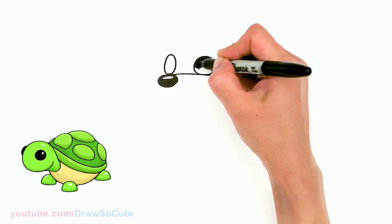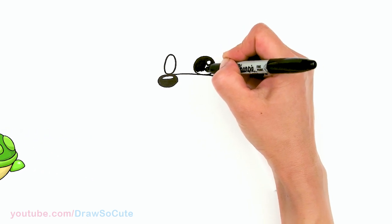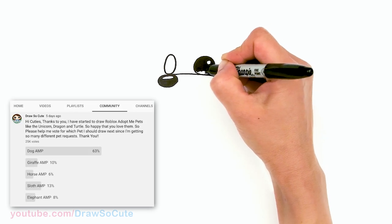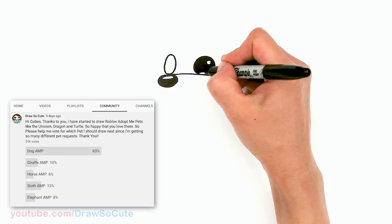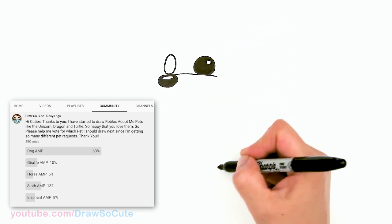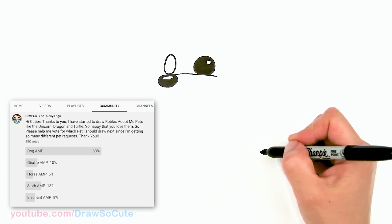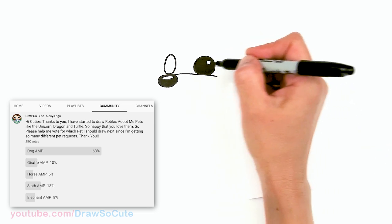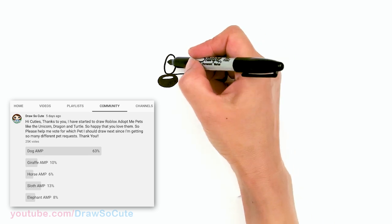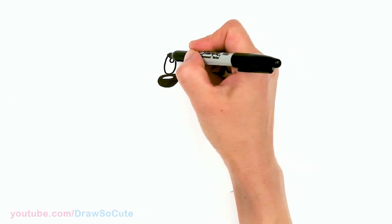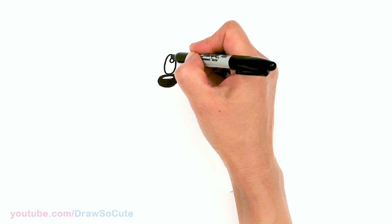Thank you cuties for voting on my community page for which Roblox Adopt Me pet you wanted me to draw next. This dog definitely won big time — I'm so glad you guys chose the dog because I love this dog too, it's so cute. Okay, so we're going to shade in this one too, and I'll put a little highlight right here on the edge as well, then shade it in.